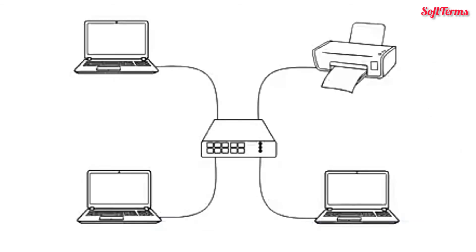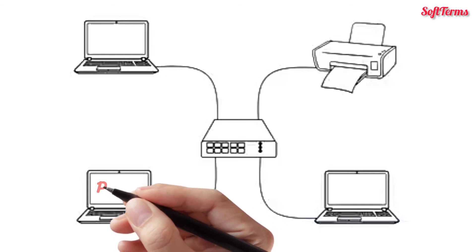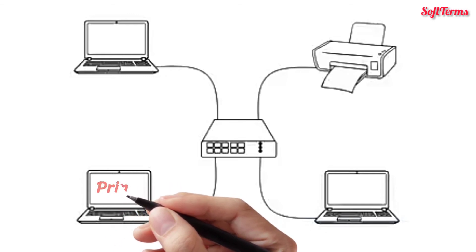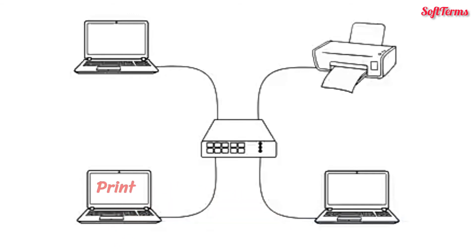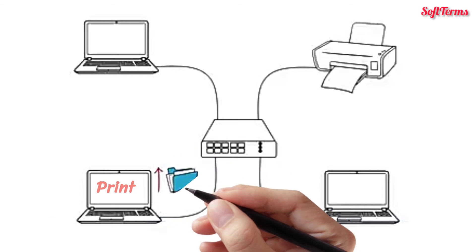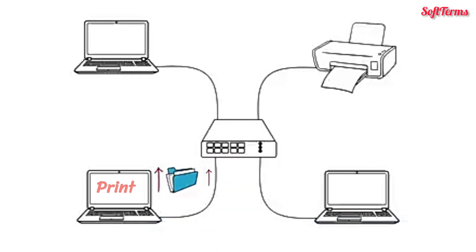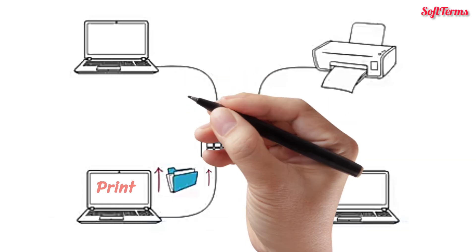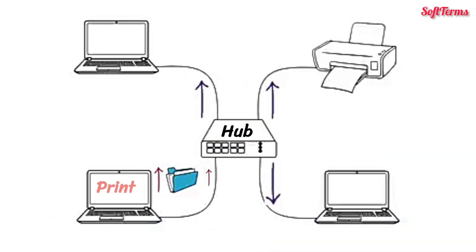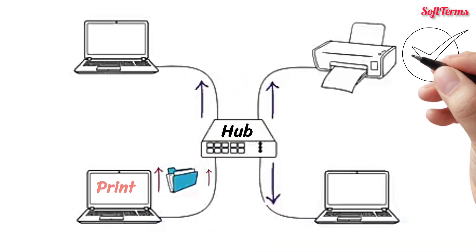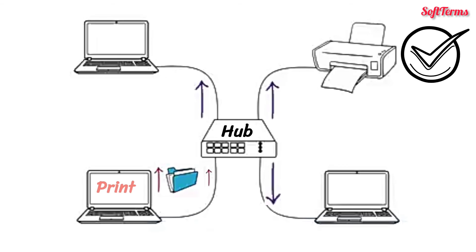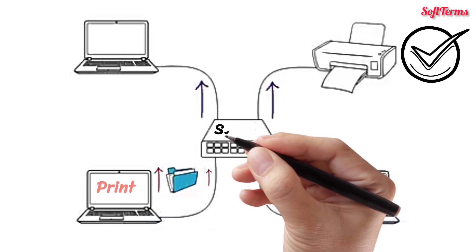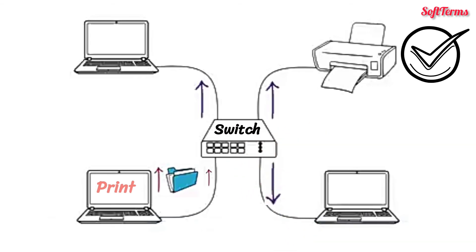Suppose your computer is connected to a printer in a star topology network. When you click print from your computer, the file is sent to the central device. If the central device is a hub, the file is forwarded to all connected computers; however, only the printer accepts it. On the other hand, if the central device is a switch, the file is sent to the printer only — that is unicast transmission.